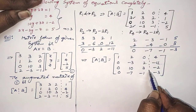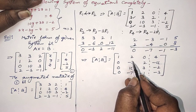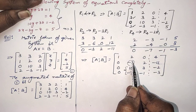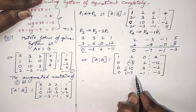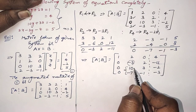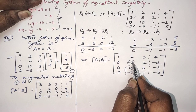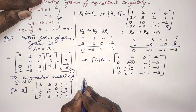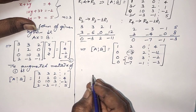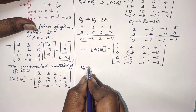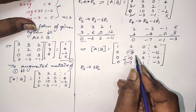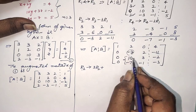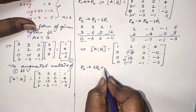Now using the second pivot element, we have to make the two elements below it zero. Since there is no chance to make this element 1 directly, I will use ordinary operations: multiply row 3 by 3 and multiply row 2 by 10, then add. That is the operation. So R3 → 3·R3 + 10·R2.